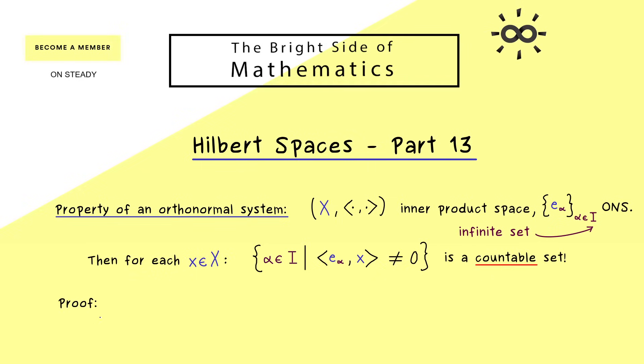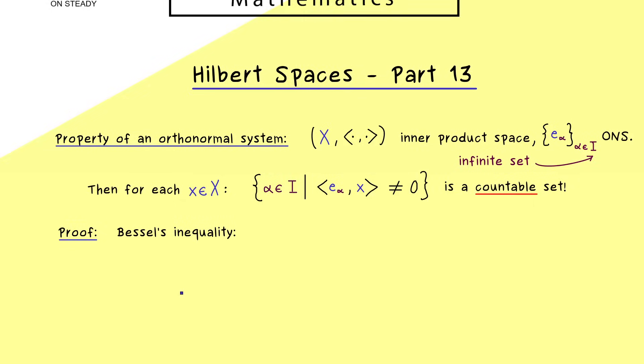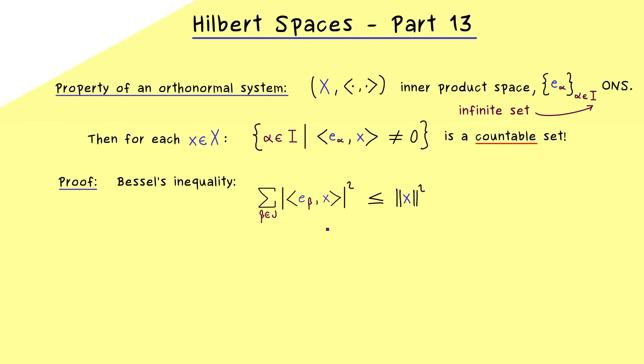And this nice property for any ONS immediately follows from Bessel's inequality. So let's recall this important inequality from the last video. It simply tells us that the sum over the squares of the inner products here stay below the norm of X squared, and it holds regardless which finite subset J in I is considered.